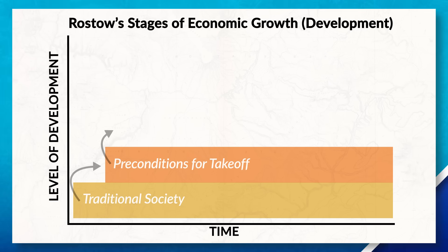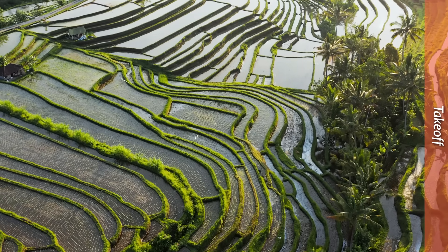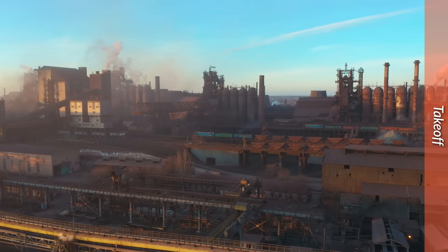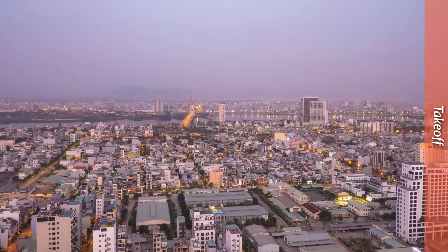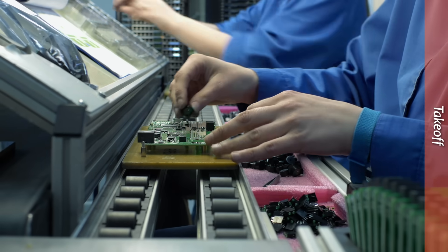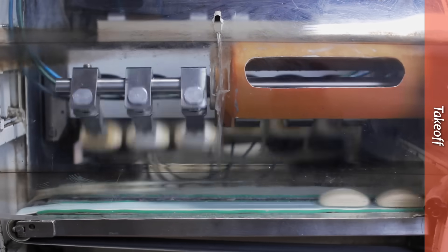From there, society moves into the third stage, which is the takeoff stage. During this stage, rapid economic growth occurs. Jobs start to transition out of traditional agricultural-based activities and into industrialized activities. This new economic growth also leads to increased urbanization, as more jobs and opportunities continue to open up in the secondary sector. States here also gain access to new technology, which helps increase their overall production. But unfortunately, we can also see states in this stage get exploited by foreign states as they seek to take advantage of their raw resources and cheap labor.